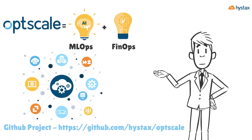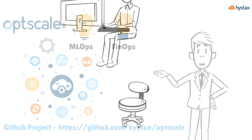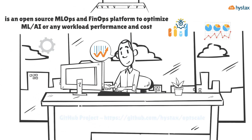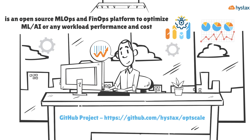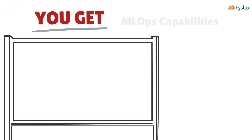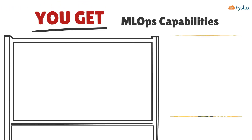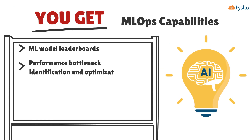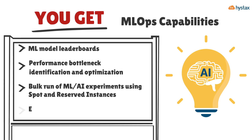OptScale is an open-source MLOps and FinOps platform to optimize ML/AI or any workload performance and cost. You get MLOps capabilities, ML model leaderboards, performance bottleneck identification and optimization, bulk run of ML/AI experiments, and experiment tracking.